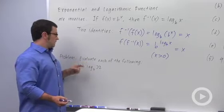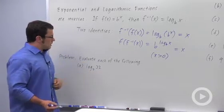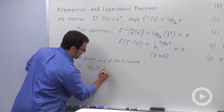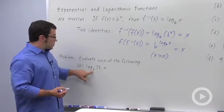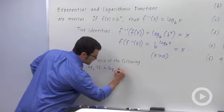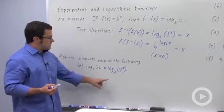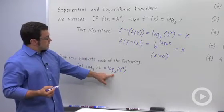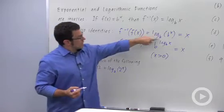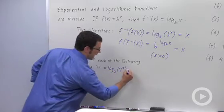Let's evaluate each of the following. Log base 2 of 32. Well, first, you've got to recognize that 32 is an integer power of 2. Log base 2 of 2 to the fifth. And once you see that, you can use the first identity, log base b of b to the x equals x. So log base 2 of 2 to the fifth is 5.